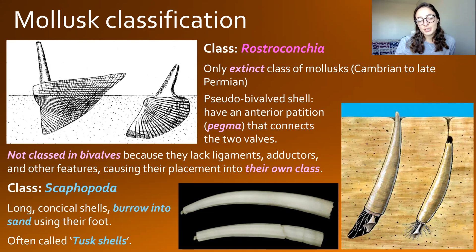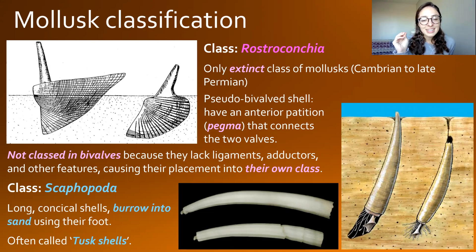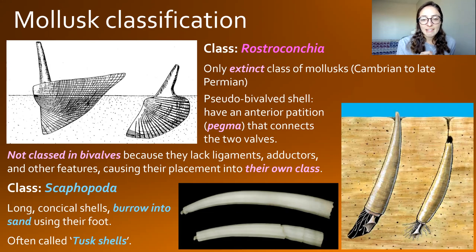Moving on, we have Rostroconchia, which is the only extinct class of mollusks. These guys lived from the Cambrian to the late Permian and went extinct in the Permo-Triassic extinction. They have pseudobivalved shells — almost like bivalves, but not quite. They have an interior partition called their pegma that connects the two valves. However, they're not classed in Bivalvia because they lack ligaments, adductors, and other features that all bivalves include. They could have led to bivalve evolution as a more primitive form of modern bivalves.